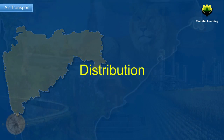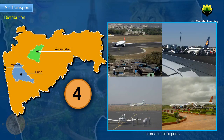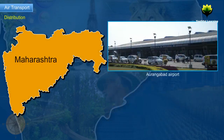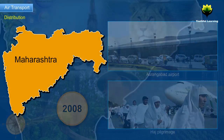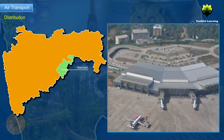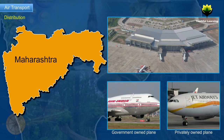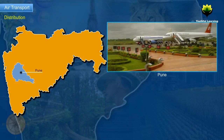Distribution. Maharashtra has four international airports in Mumbai, Pune, Aurangabad and Nagpur. The Chhatrapati Shivaji International Airport in Mumbai is one of India's busiest airports. The Aurangabad Airport started flights to Jeddah for Haj pilgrimage in 2008. Other smaller airports are present in Nanded, Washim, Akola, Karar, Ratnagiri etc., generally used by government or privately owned planes. Two other international airports are being built in Pune and Navi Mumbai.